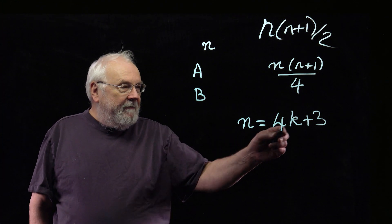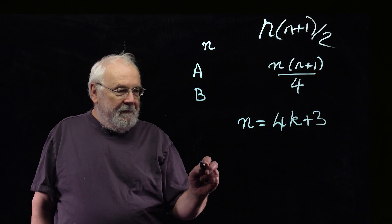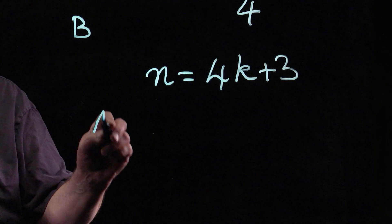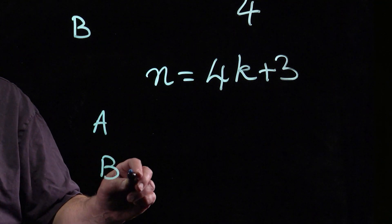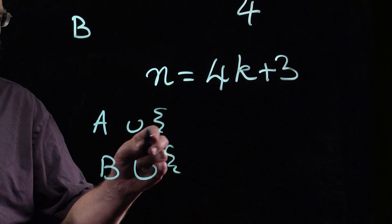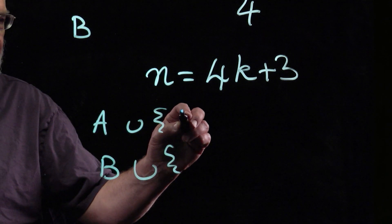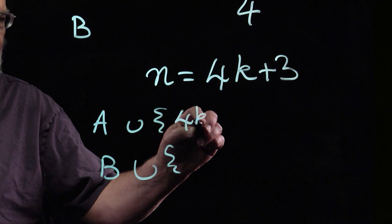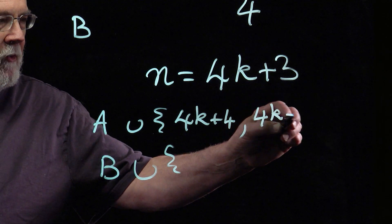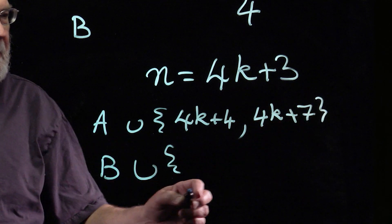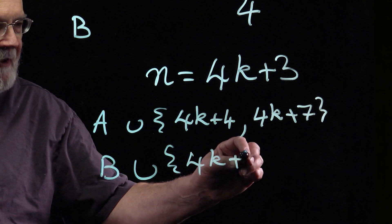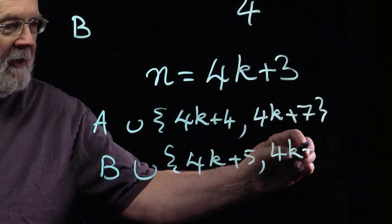Supposing you've done it for this particular k. We've broken the numbers from 1 to n up into two sets, we'll call them A and B. And then we'll just add some extra ones. So to one of them I will add 4k+4 and also 4k+7. And to the other one I will join 4k+5 and 4k+6.